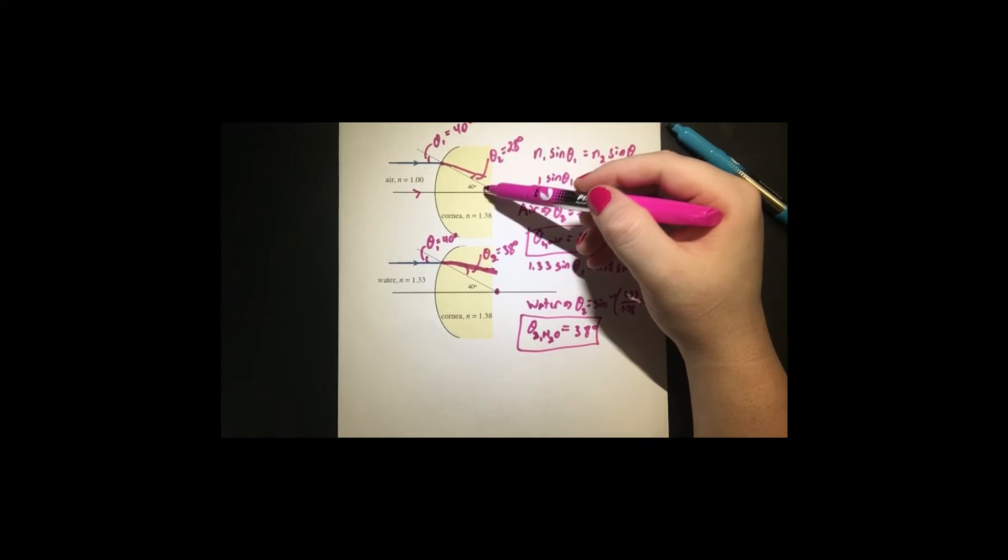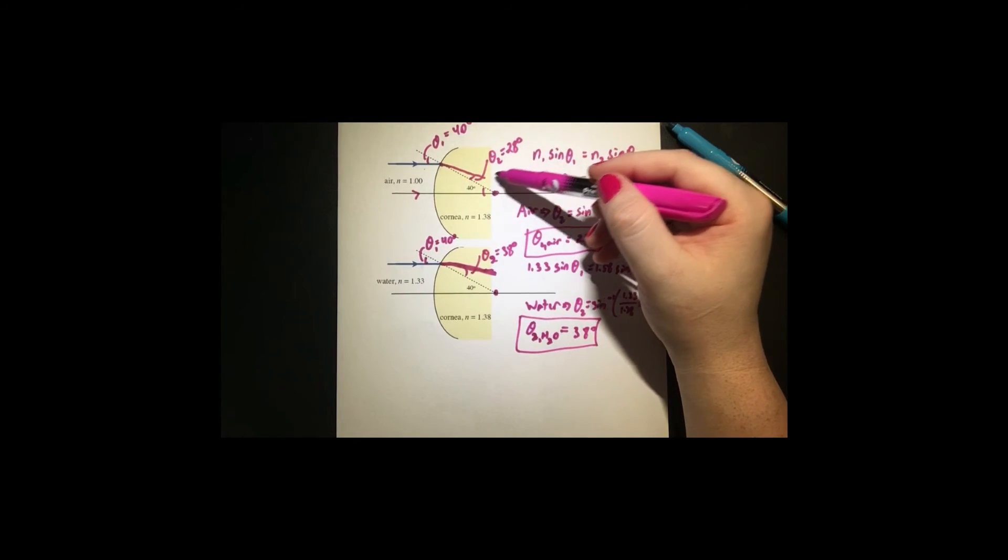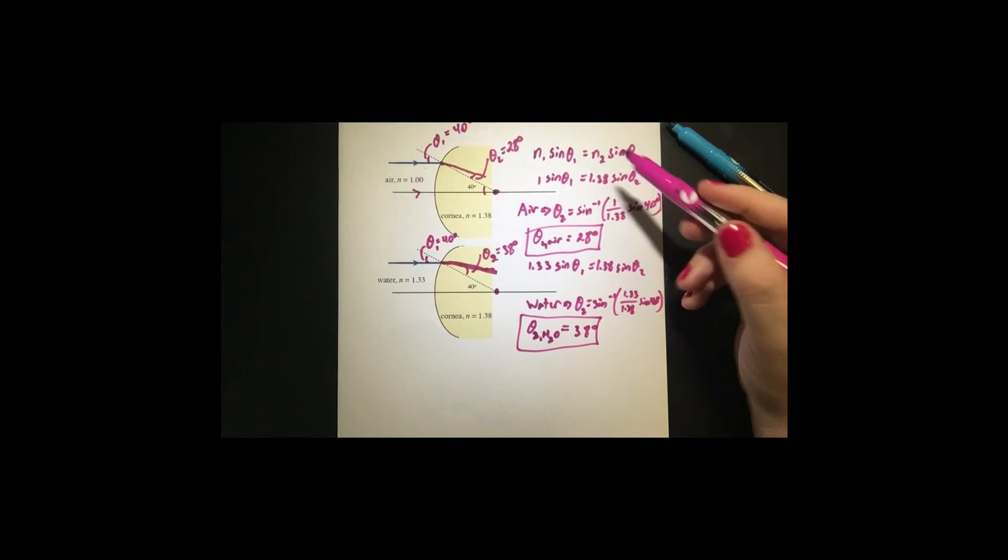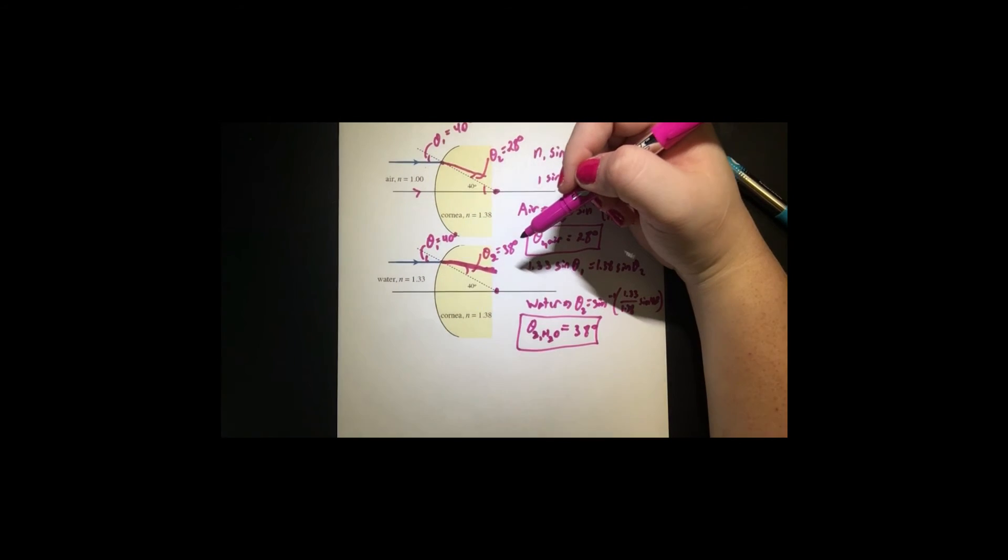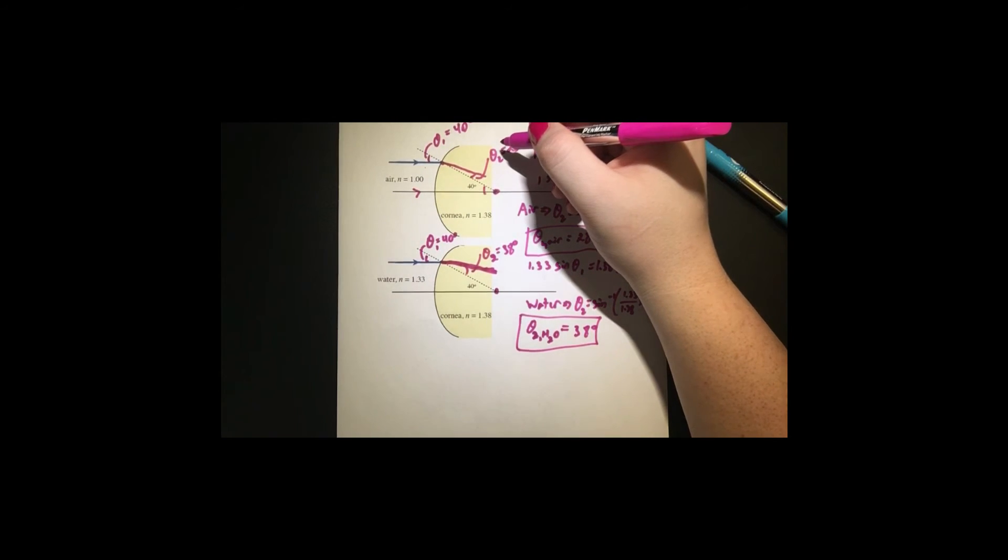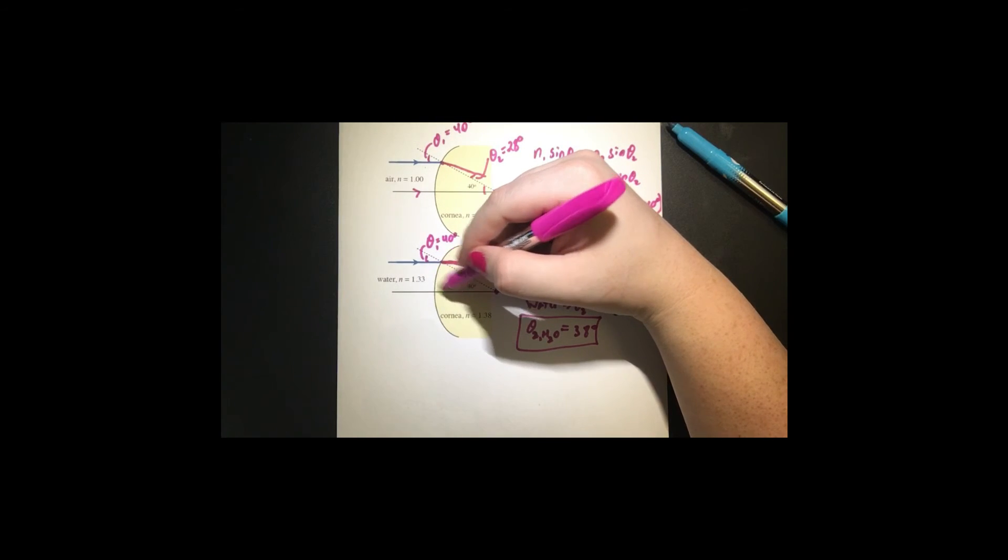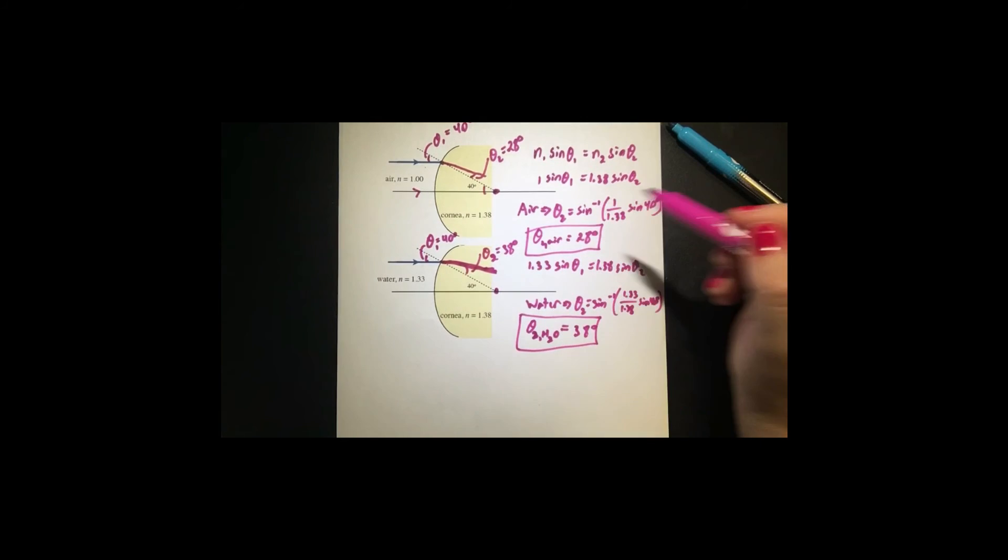we have much better vision in the air because of this theta 2. And that's due to the index of refraction, of n equals 1 versus n equals 1.33. So you see that the closer that the two indexes of refraction are, the bigger the angle for these two.